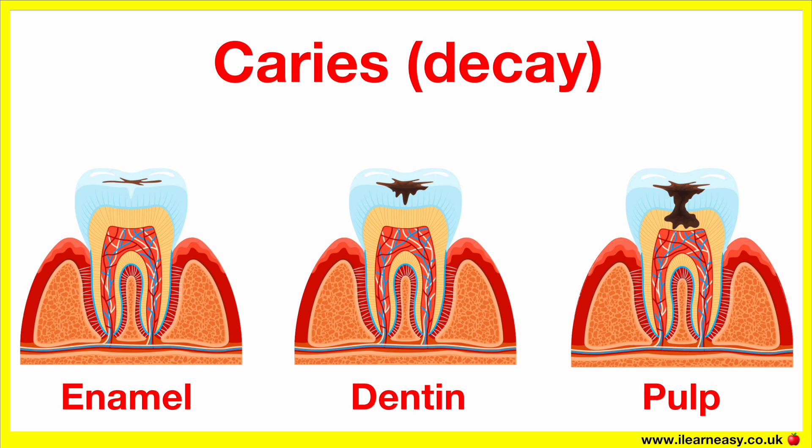Deep caries. This decay reaches close to or into the pulp, where the nerve chamber of the tooth is. The decay appears as a large visible cavity, often with tooth structure loss. Deep caries causes severe pain, sensitivity, and can lead to infection or abscess if untreated.